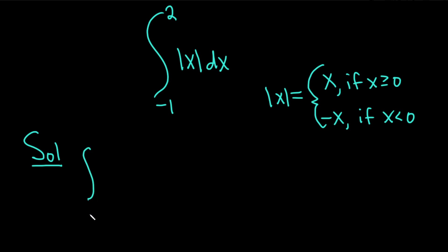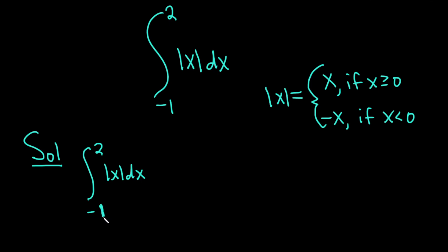So here we have the integral from negative 1 to 2 of the absolute value of x dx. We're basically going to break it up into cases — we're going to look at when it's positive and when it's negative. Our limits of integration are going to dictate that.